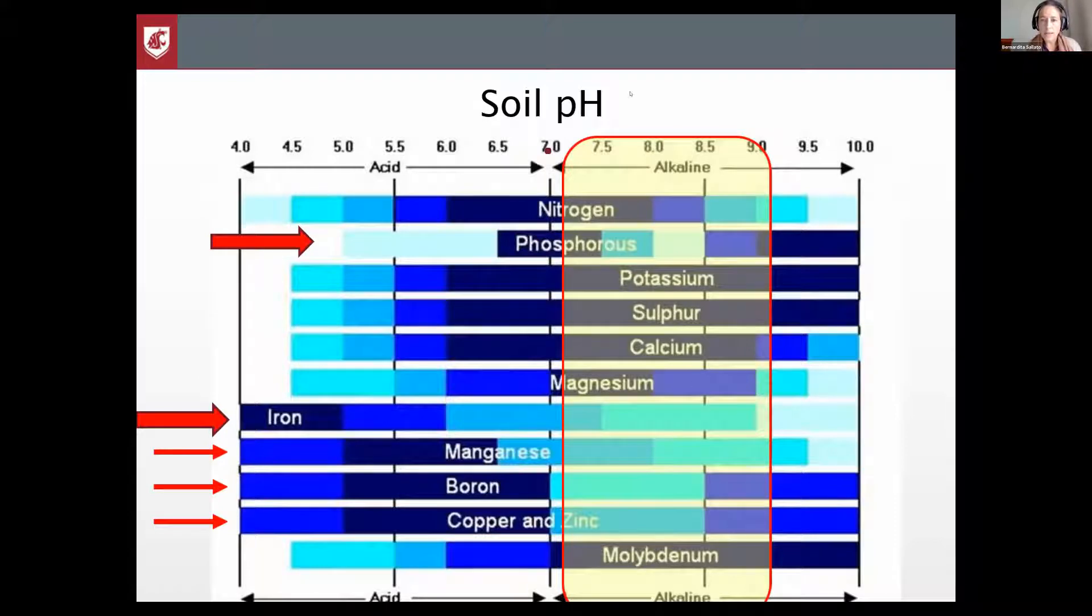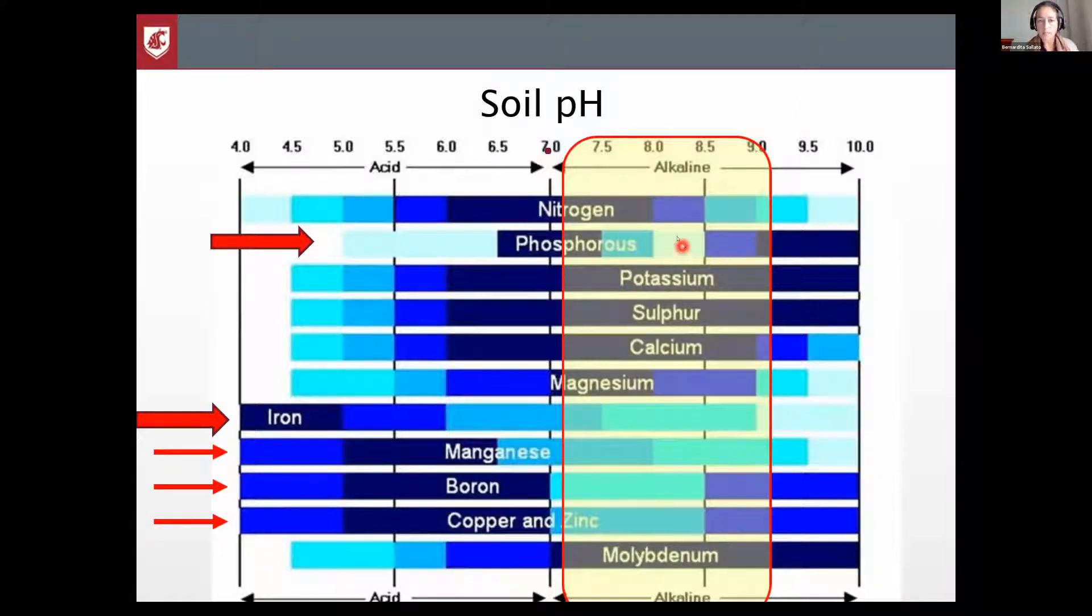And you can see here, I'm going to show you that especially phosphorus can be very deficient with high pH or not available. The same with all the metals—iron, manganese, boron, copper and zinc—they reduce their availability. So under these conditions, the most important practice that you should be trying to do is to manage the pH.